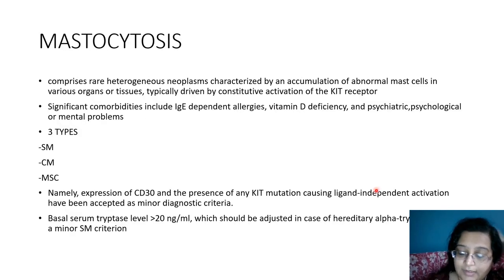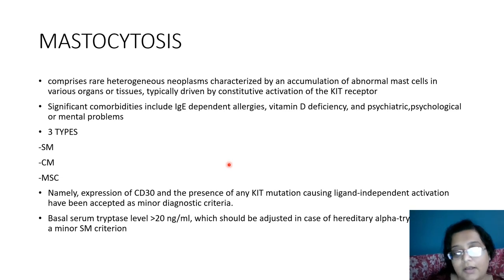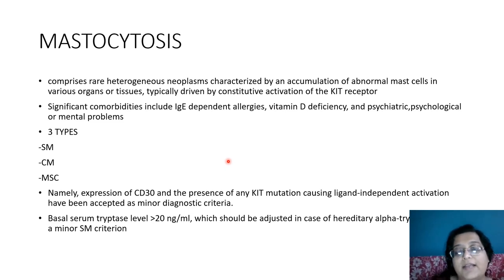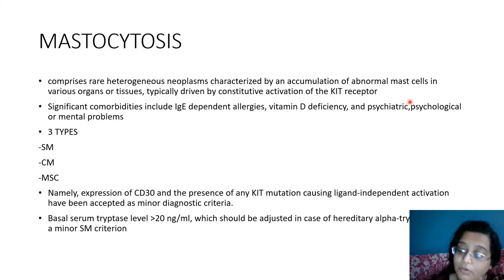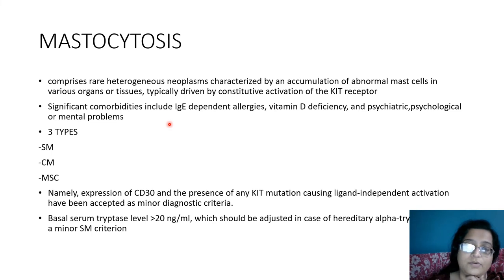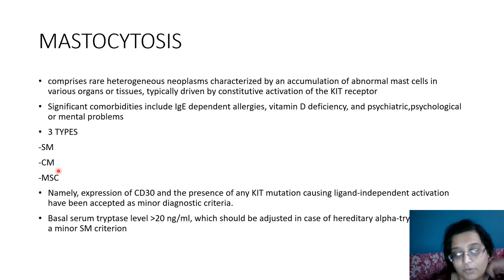Moving to mastocytosis: these comprise heterogeneous neoplasms involving accumulation of abnormal mast cells, defined by greater than 25 mast cells in a cluster. There are now three separate WHO categories: systemic mastocytosis, cutaneous mastocytosis (now a separate WHO entity), and mast cell sarcoma. Significant comorbidities now being considered include allergy, vitamin D deficiency, and psychiatric or psychosocial disorders.